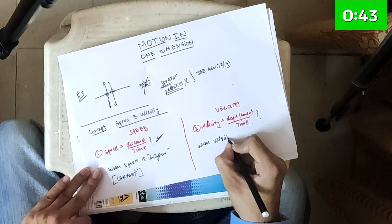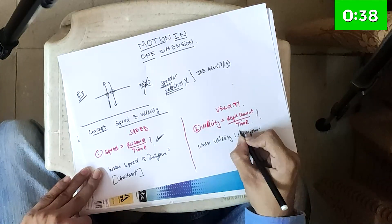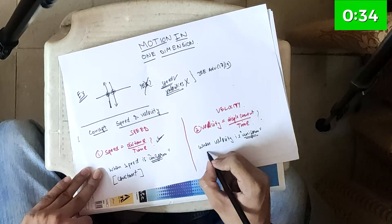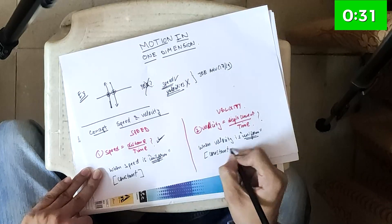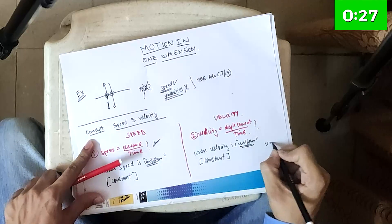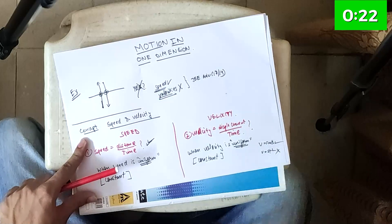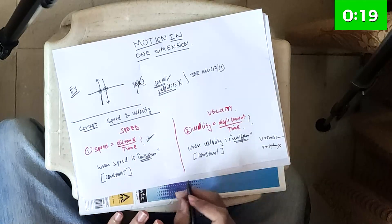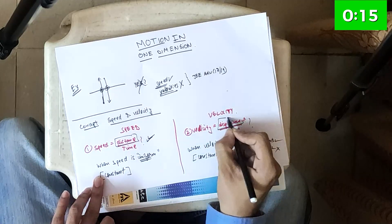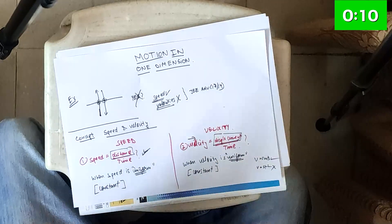Similarly, use the velocity formula only when velocity is uniform or constant. Remember the word 'uniform' because questions use that word. Uniform means not changing with time — for example, V = 5 m/s is constant, but V = 5t² is not. Also note: velocity is a vector quantity, while speed is a scalar quantity.